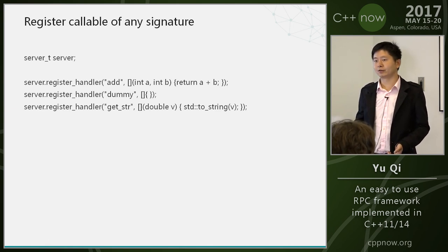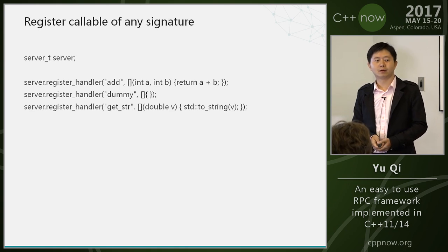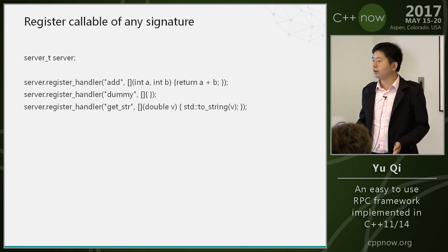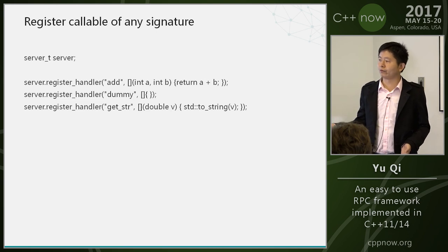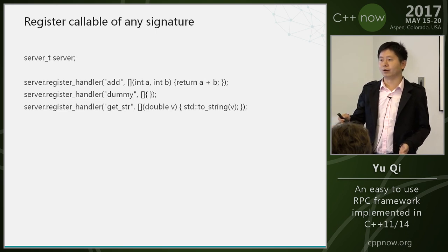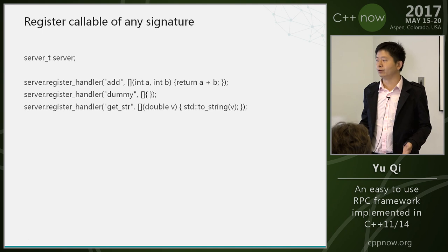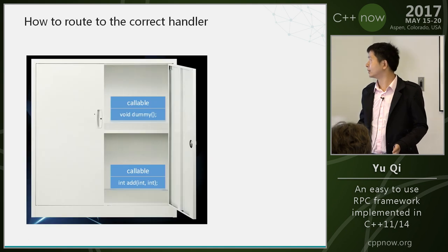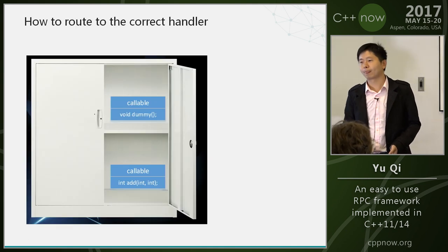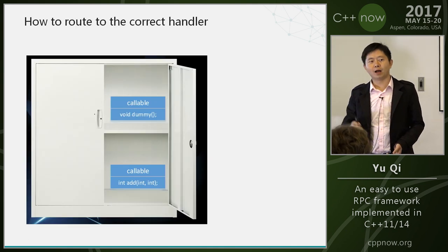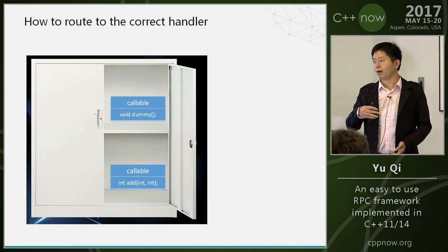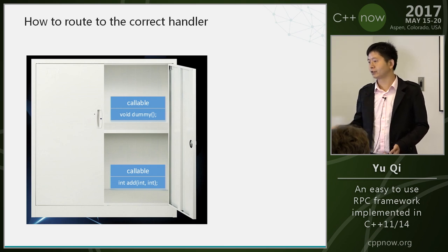But the next challenge is coming. You have put different kinds of functions in a container, but they all look the same. How do you find the right function?